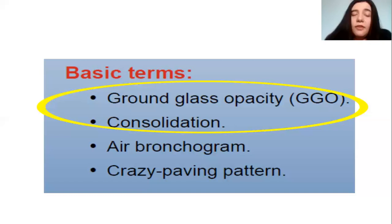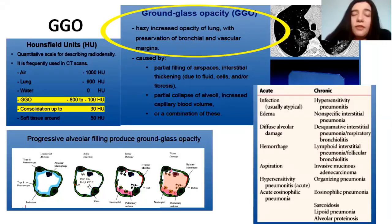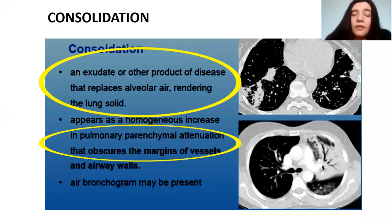The consolidation — to differentiate it from ground glass opacity — in consolidation, it obscures the margin of the vessels. With ground glass opacity, we have preservation of the bronchial and vascular margins. Consolidation is a process that replaces the alveolar air, rendering the lung solid. The air bronchogram is a pattern of air-filled bronchi on a background of opaque, airless lung.